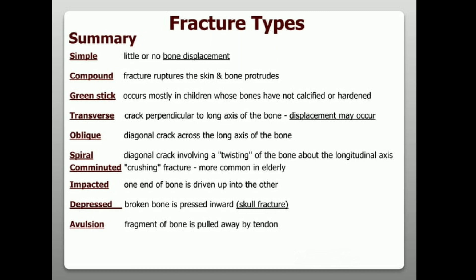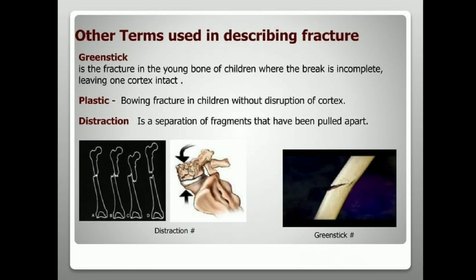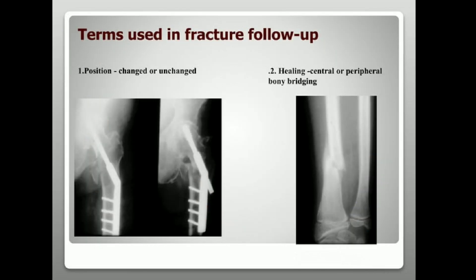Other terms used to describe fractures include: greenstick fracture — an incomplete fracture in the young bone of children where one cortex remains intact; plastic fracture — bending in children without disruption of the cortex; and distraction — a separation of fragments that have been pulled apart. In fracture follow-up, terms used include position (changed or unchanged) and healing (central or peripheral bony bridging).